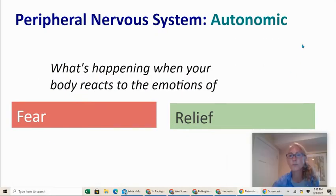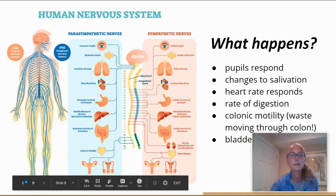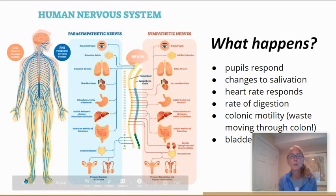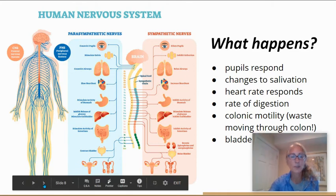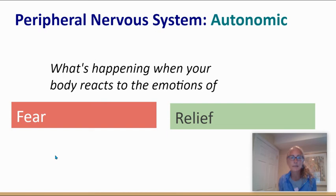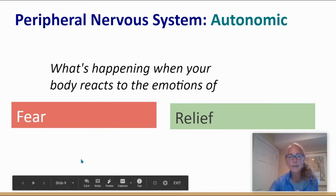Let's go back to the peripheral and autonomic nervous systems. When your body reacts to the emotion of fear, your pupils are going to dilate. You might get so fearful that you have a dry mouth, your heart starts to race, and even though you might not be aware of it, you'll have a hard time digesting food or contracting the bladder. If you've ever heard about being so scared you can barely swallow, that's the inhibition of peristalsis. Relief, of course, is the opposite — all the reverse reactions happen.